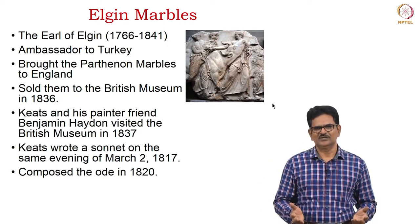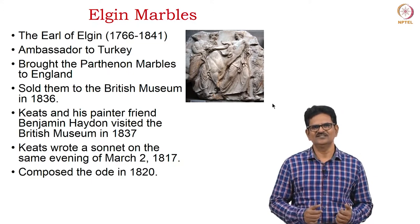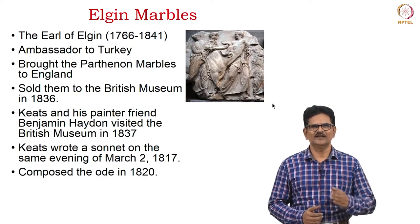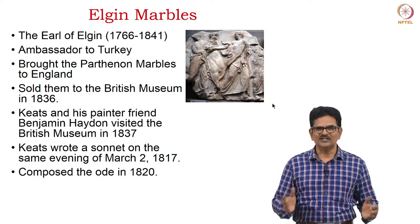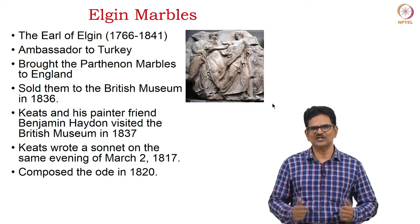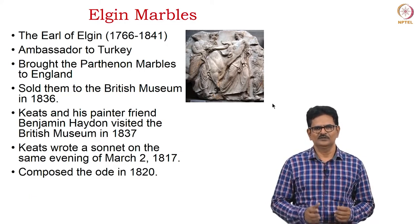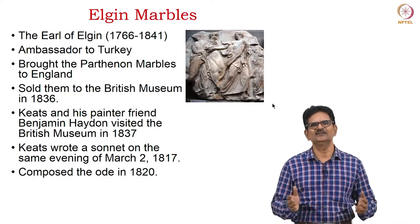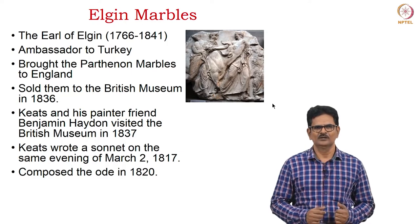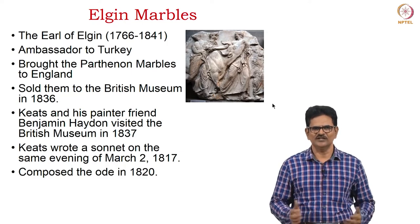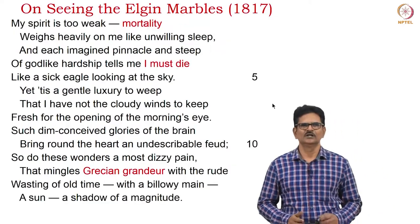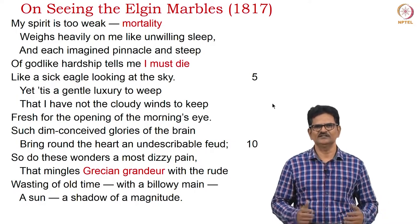Keats was interested in Greek art and culture. He visited the British Museum and saw these Elgin marbles, which were brought to London by the Earl of Elgin, who was an ambassador to Turkey. He brought the Parthenon marbles to England and later sold them to the British Museum in 1816. That's when Keats and his painter friend Benjamin Haydon visited the British Museum in 1817 and saw these marbles. On seeing these marbles, Keats wrote a sonnet on the same evening of March 2nd, 1817. He also later composed this 'Ode on a Grecian Urn.'